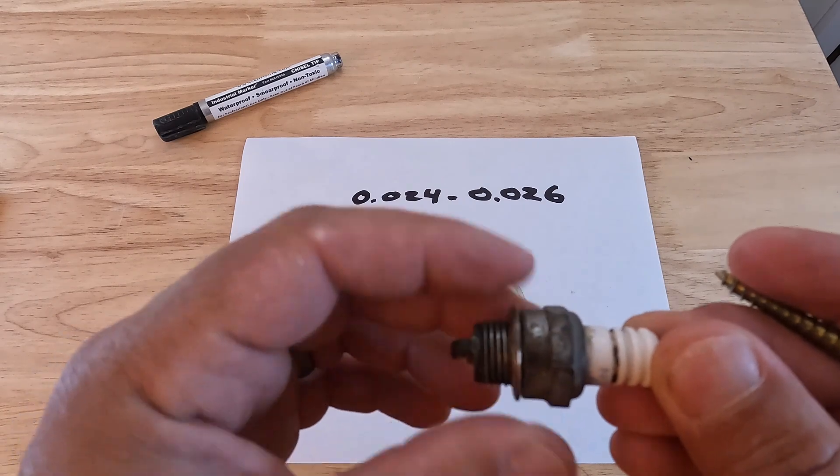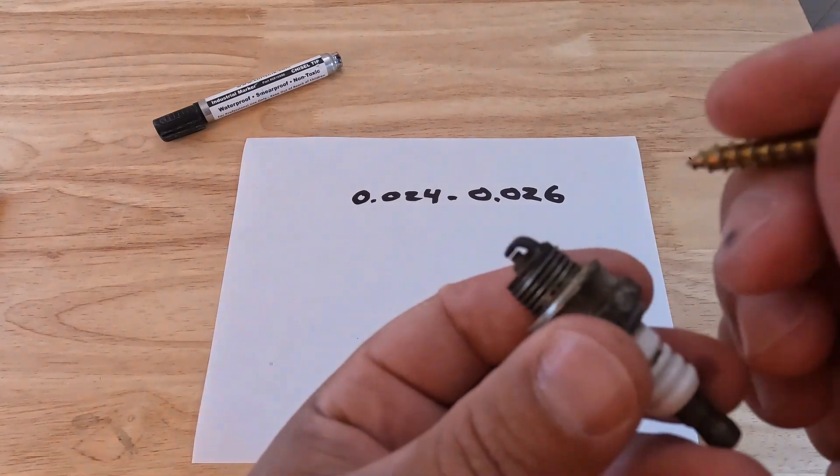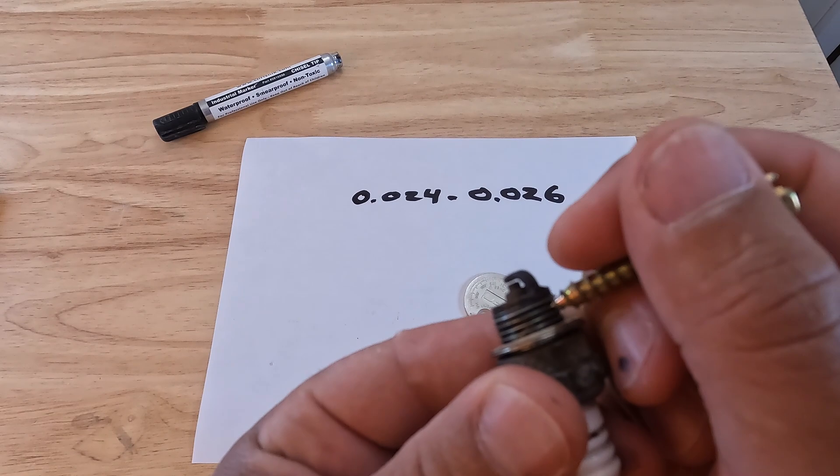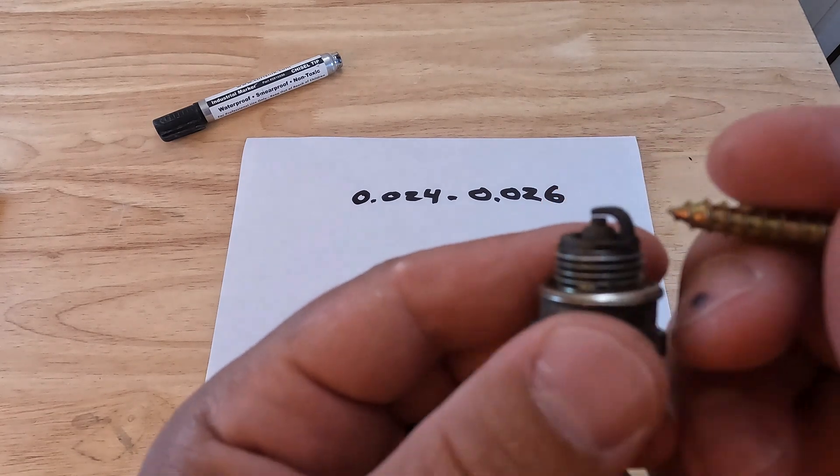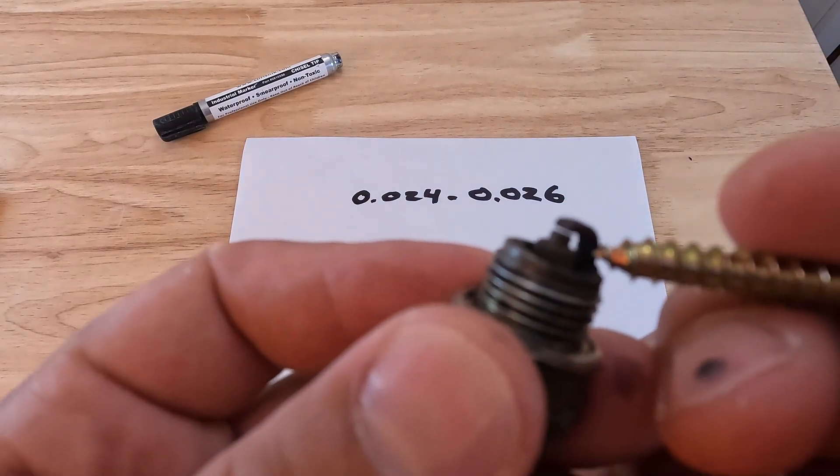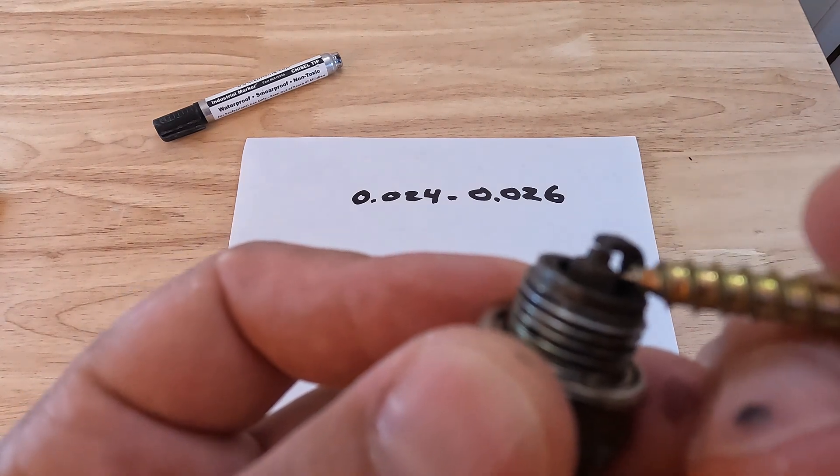You could see this piece that twists, this is just a gasket, a metal gasket. These are the threads that go into the cylinder head, and then here we have the insulator tip.